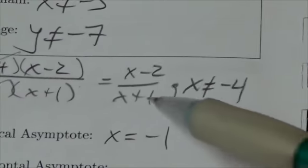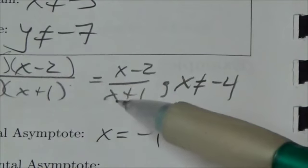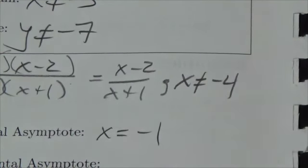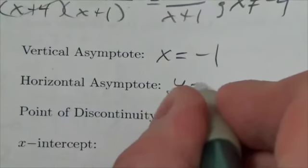When you take a look at the function that we're left with and you compare the degrees, this is a first degree over a first degree. So you're just going to take and compare the leading coefficients, which will be 1 over 1. And so the horizontal asymptote here will be y equals 1.